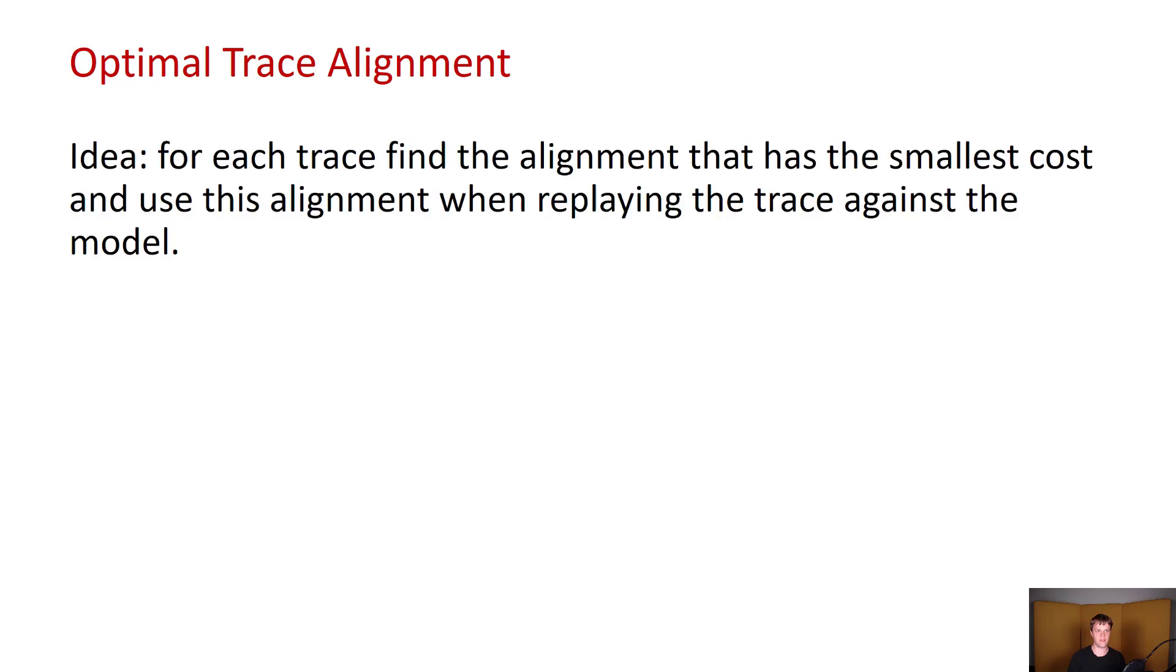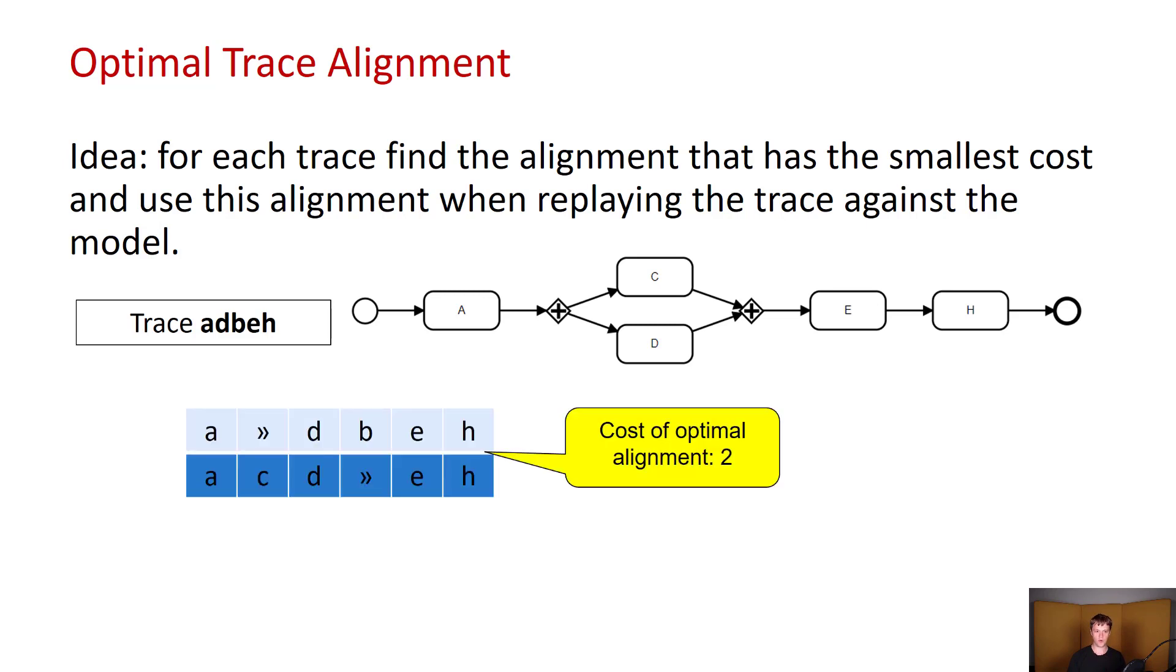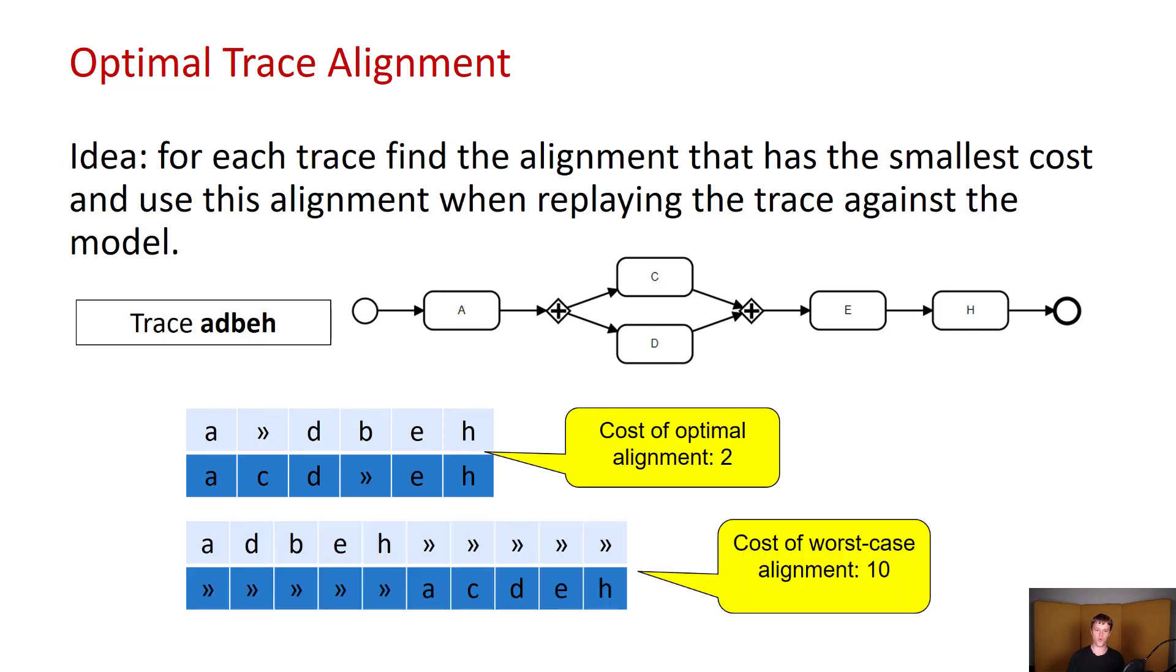But speaking of trace alignments, we also have to cover the notion of optimal trace alignment. The basic idea here is that for each trace, we should find the alignment that has the smallest cost and use this alignment when replaying the trace against the model. So for example, if we look at the trace that we had before along with the model that we had before, the cost of optimal alignment would be 2. However, the cost of worst case alignment, assuming the default cost function, is going to be 10. And this worst case alignment basically means that we first are going to replay the entire event log and then all the activities required by the model.